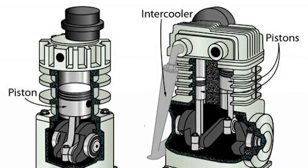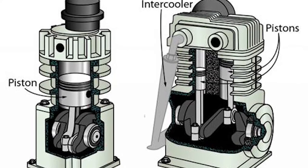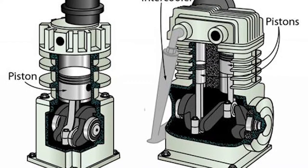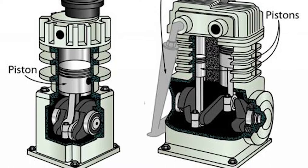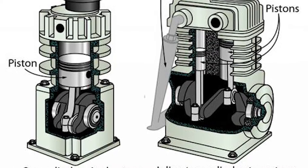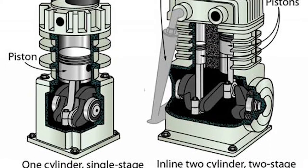The fundamental difference between a single stage and two-stage air compressor is simply the number of stages air goes through compression before it reaches the upper limit of pressure that can be stored in the tank.